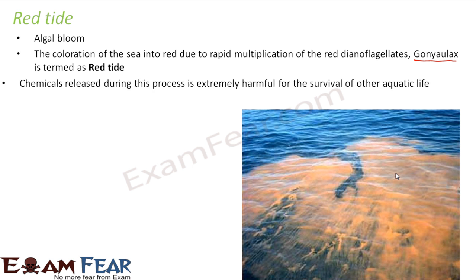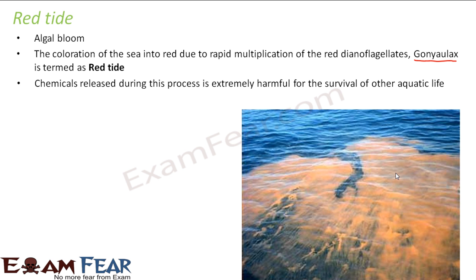During the process of this rapid multiplication, some chemicals get released which are extremely harmful for the survival of other aquatic life. Due to this red tide, all other organisms living in the sea — fish big or small — may die because of the poisonous chemicals produced during the formation of red tide.